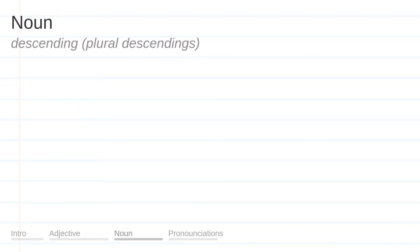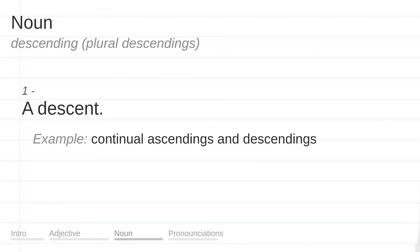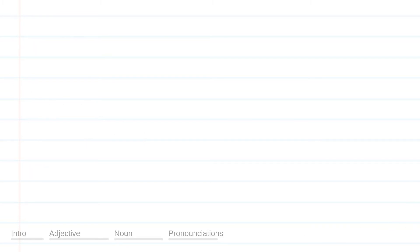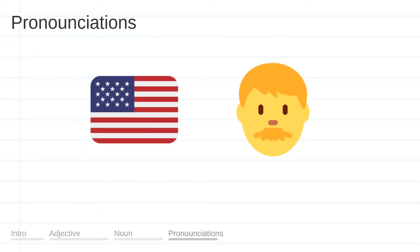Noun. A descent. Example: Continual ascendings and descendings. Descending.